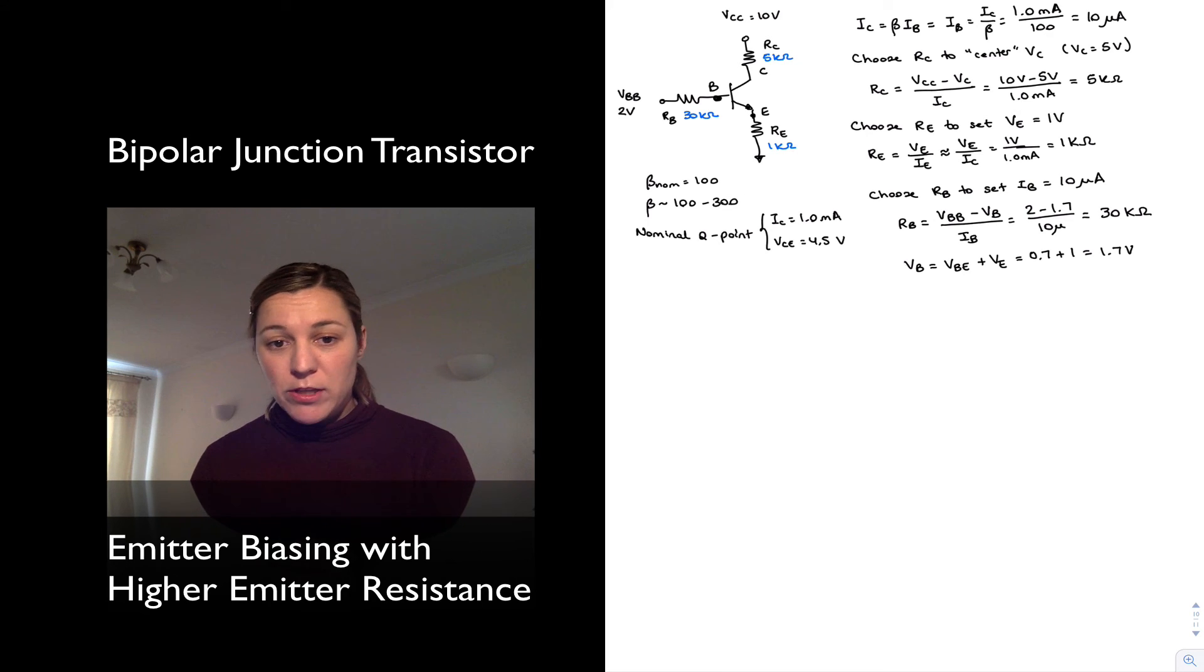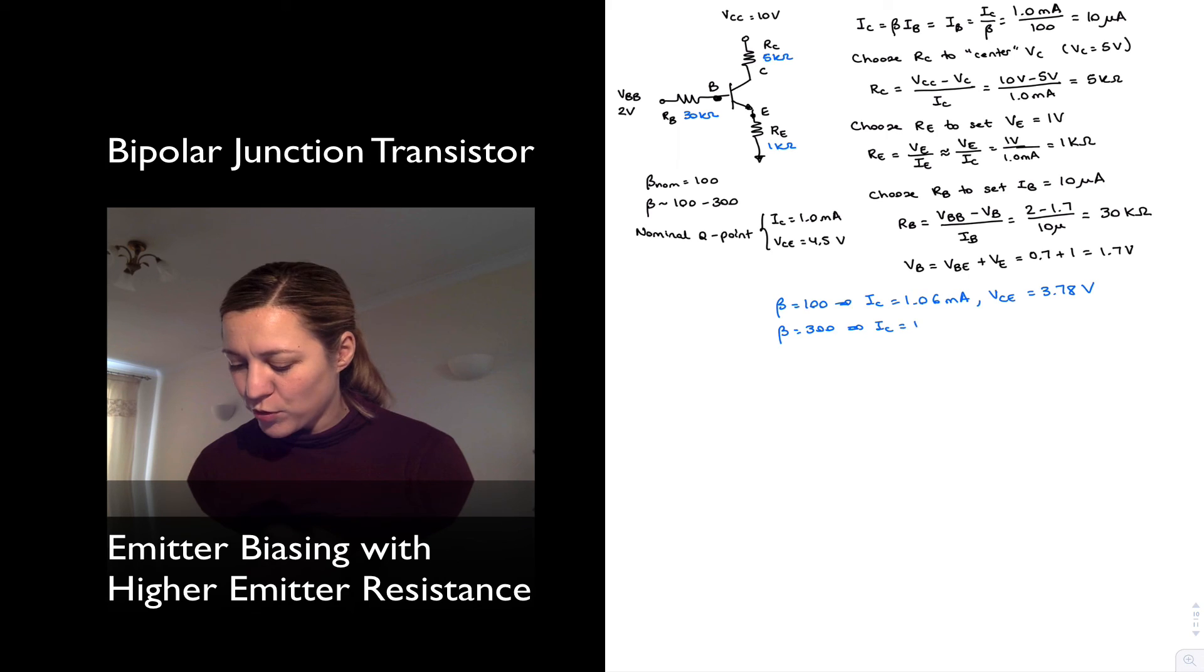And when I run the simulations, the results obtained for beta equals 100 were as follows: IC was equal to 1.06 milliamps, VCE was 3.78 volts. And beta equals 300: IC is equal to 1.21 milliamps, VCE was 2.71 volts.